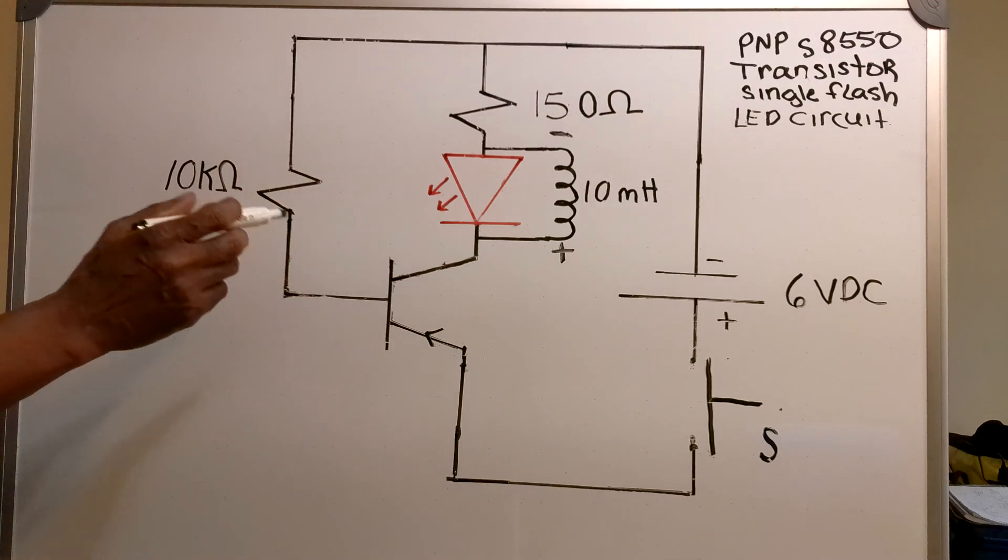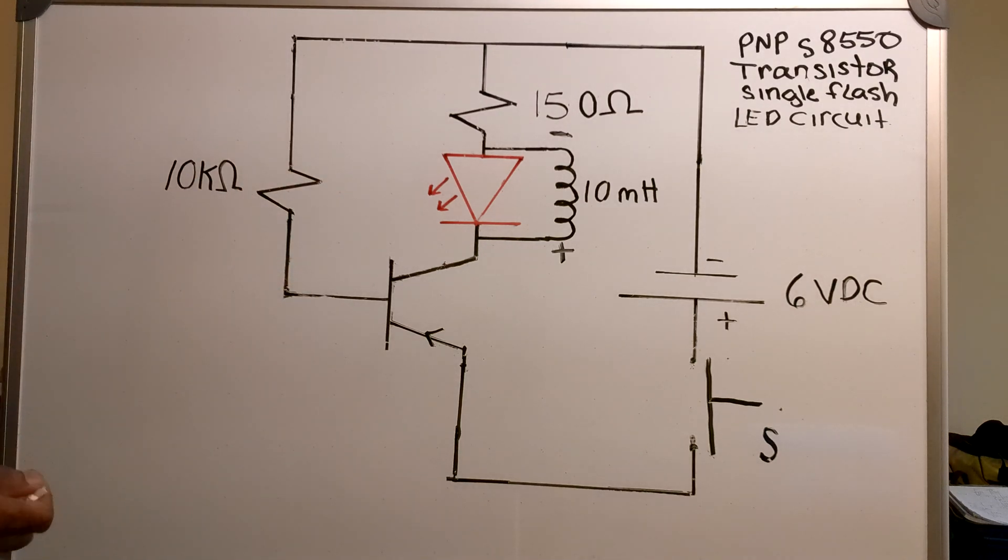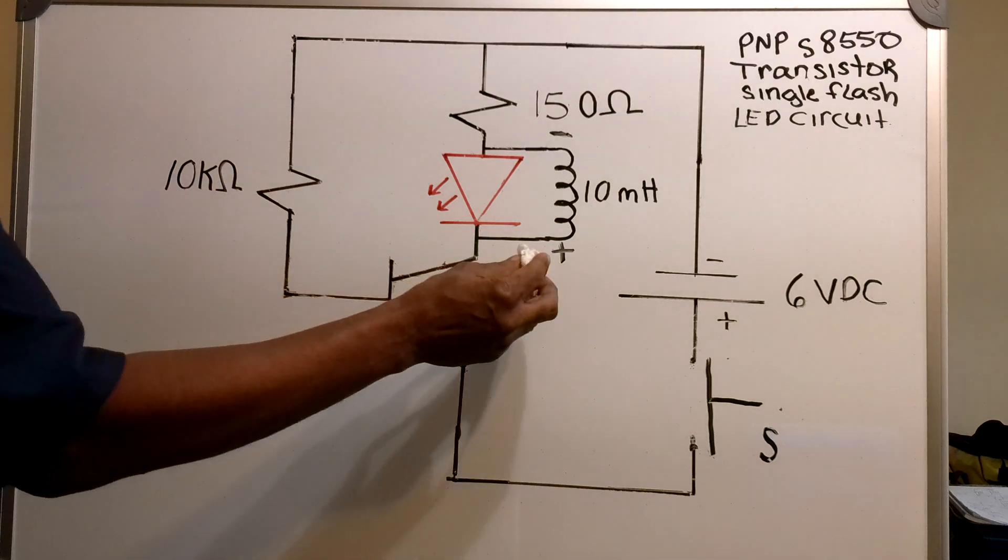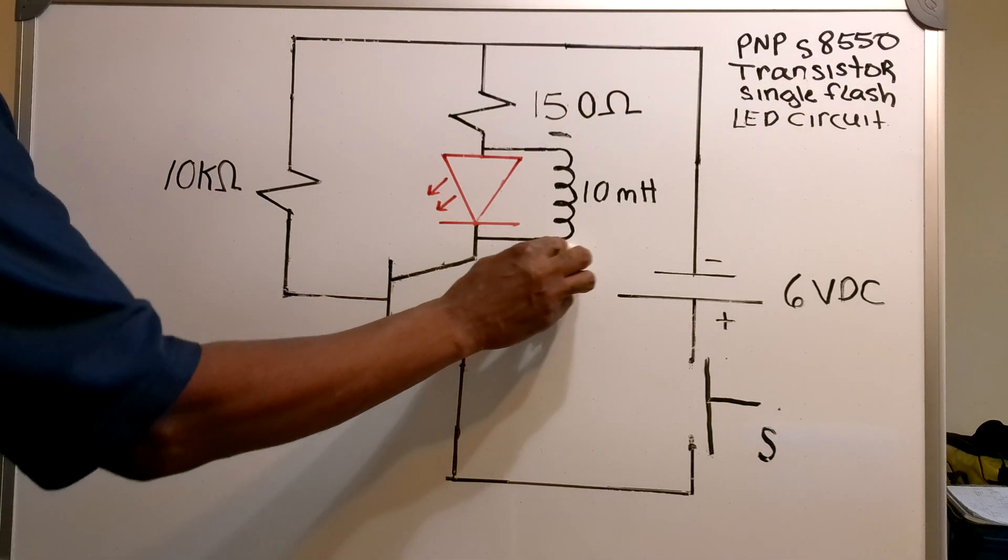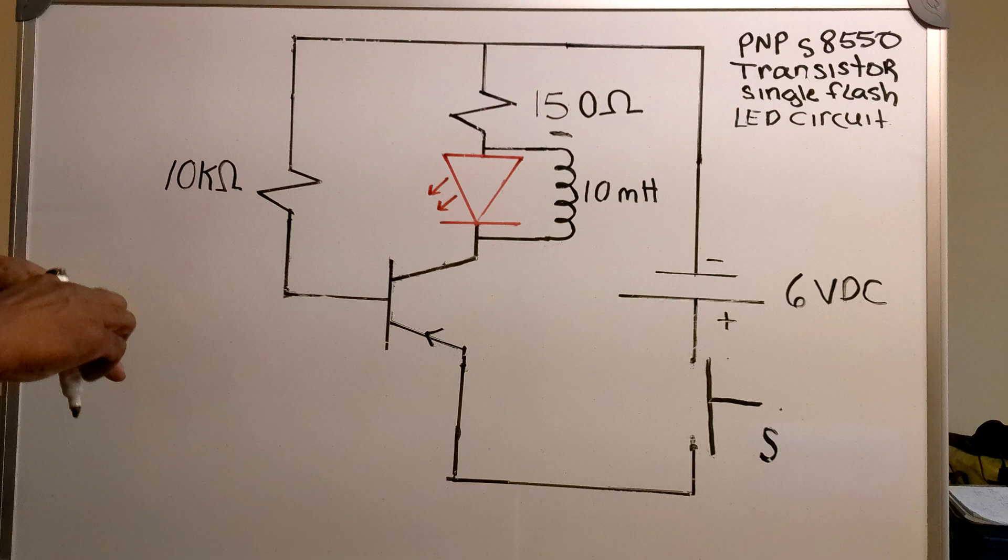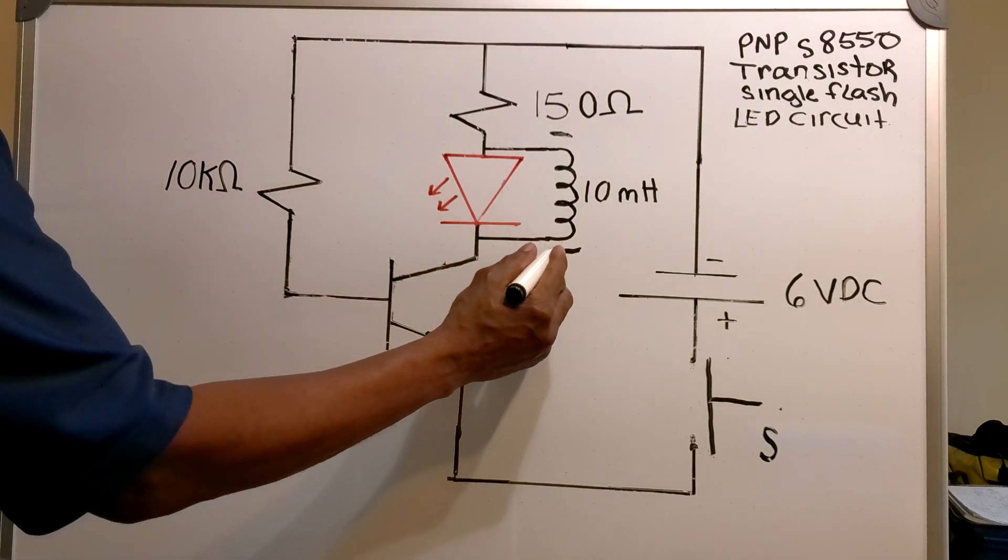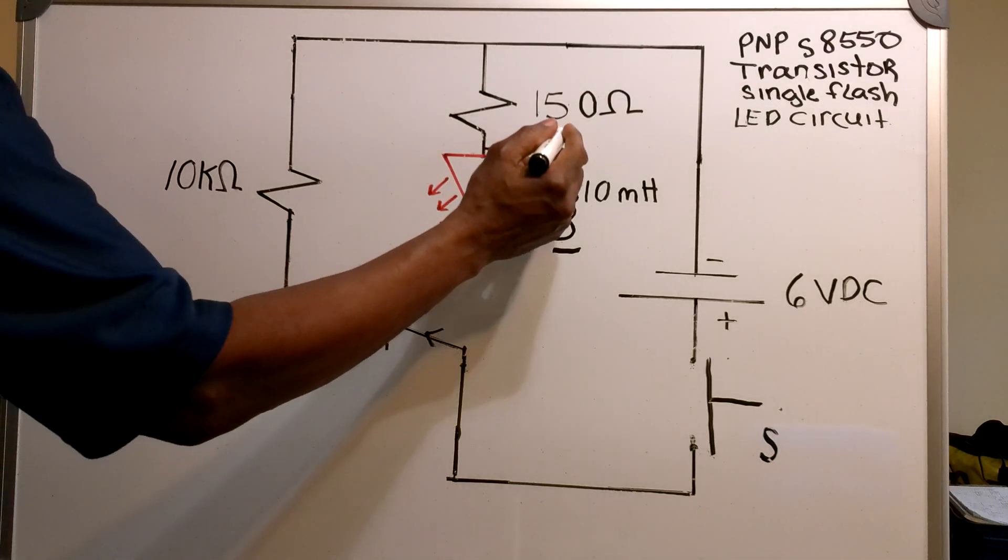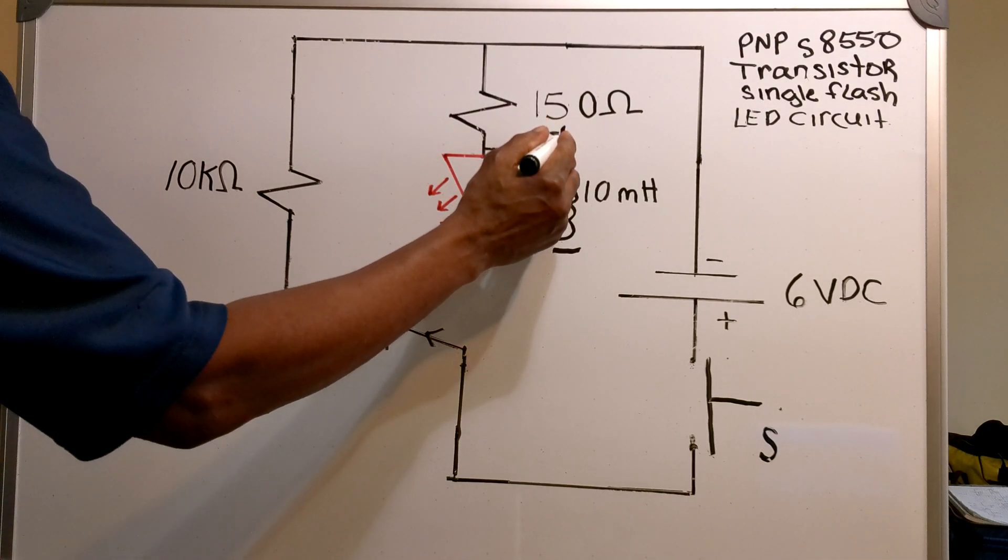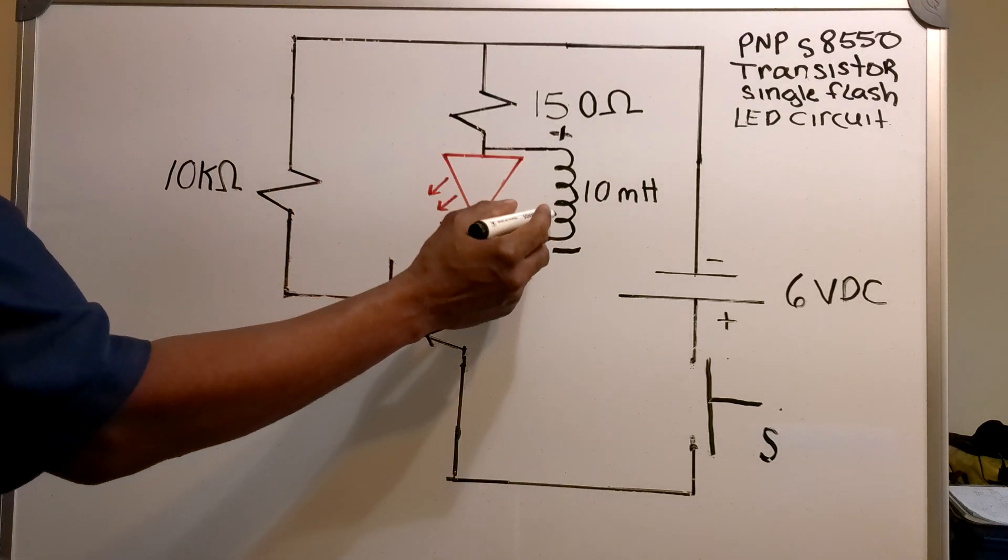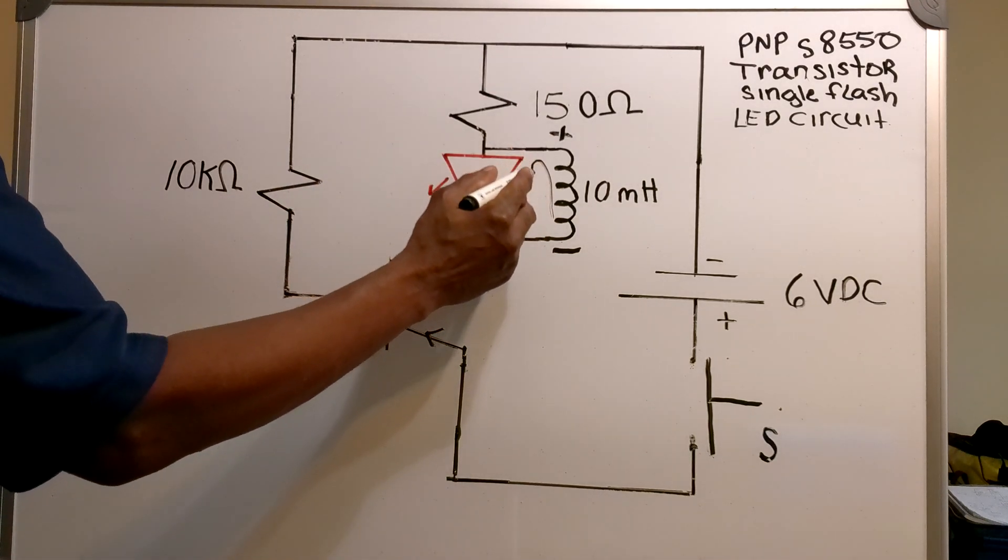And now that the switch is open, this is how the LED will light. Now the polarity of the inductor is now this: this side is negative and this side is now positive, and the current will flow through the inductor in this direction.